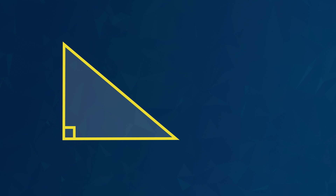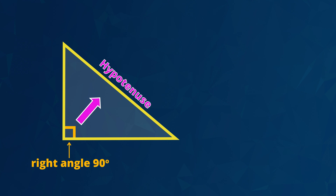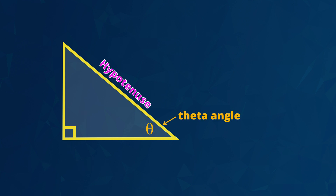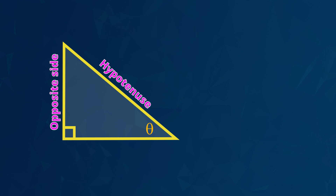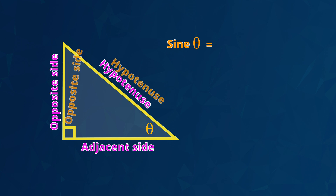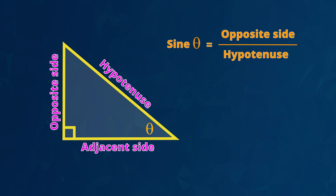Now let's see the sine rule. In this right angle triangle, here is the right angle. Opposite the right angle is the longest side, called the hypotenuse. This angle here is marked with the Greek letter called theta. Opposite the theta angle is the side called the opposite side. Right next to the theta angle is the side called the adjacent side.